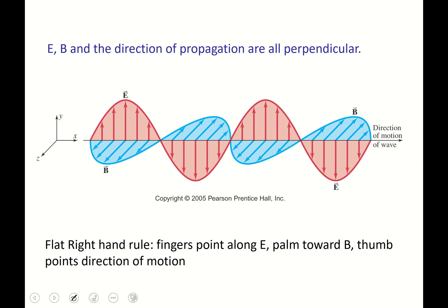The rule is that the electric field, the magnetic field, and the direction the wave moves are all perpendicular to each other. Here's a three-dimensional sketch: the electric field in red goes up and down like a sine wave, the magnetic field in blue goes into and out of the screen sinusoidally, and the electric and magnetic fields have their maxima at the same point in time. The direction the wave moves is across the screen.